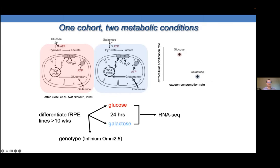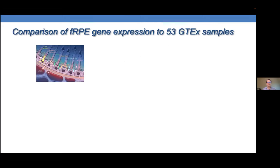We did RNA-seq on all the lines under these two conditions. It was surprising to me how little publicly available RPE RNA-seq data existed, so we wanted to bring as much value as we could from our dataset. One question that had been in my mind for years was: what tissue is the RPE most like? We did this project in collaboration with Stephen Montgomery's lab at Stanford — Stephen is a principal in the GTEx consortium — so we could analyze our data in the same pipeline used for GTEx samples and seamlessly integrate them.